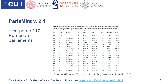Version 2.1 of the ParlaMint project contains corpora of 17 European parliaments. You can see the list of languages, which parliamentary houses are present in the corpus, how many terms are included, the time period covered, the number of millions of words per year, and the total number of millions of words in the collection.